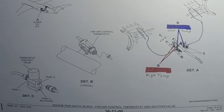On the XR aircraft, there is also a thermostat selector valve that opens to allow the high temp thermostat to operate the fan air valve when the NII systems are active.